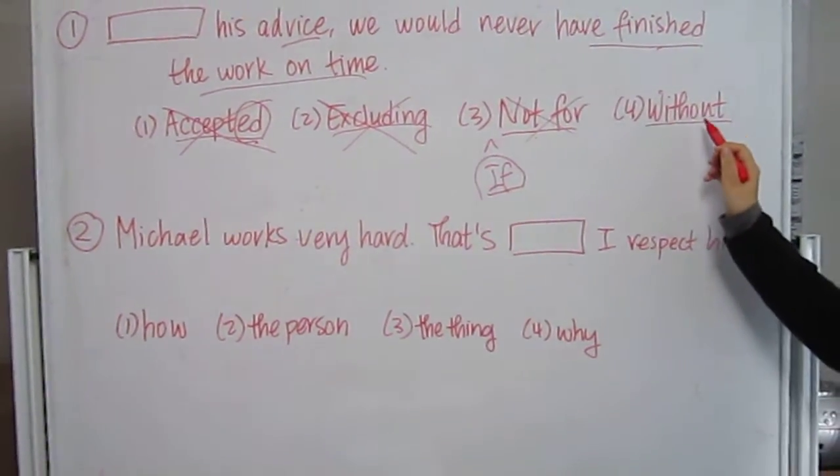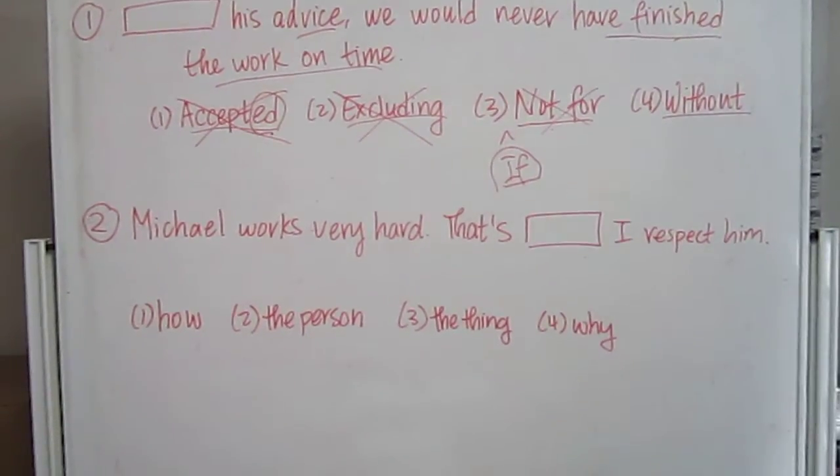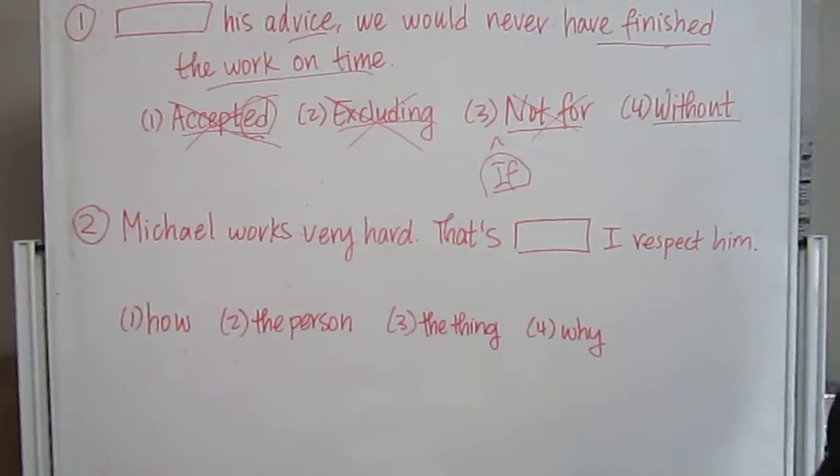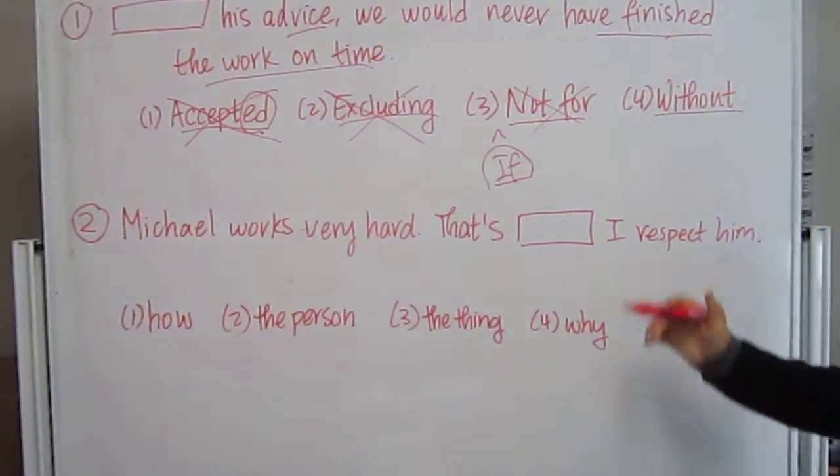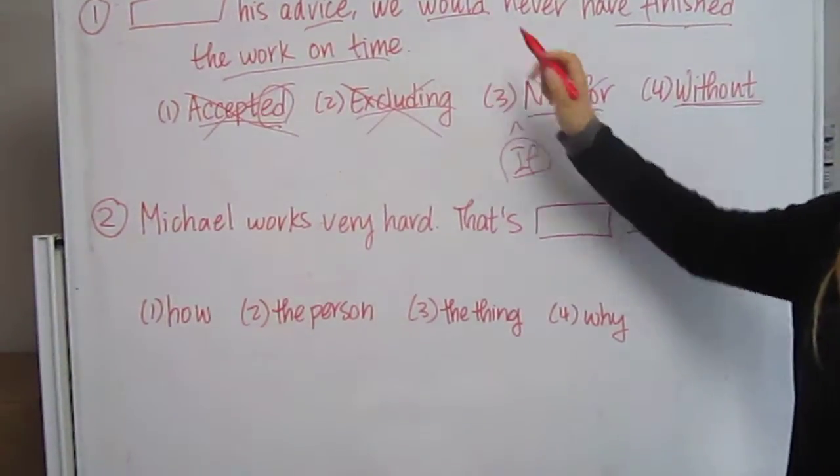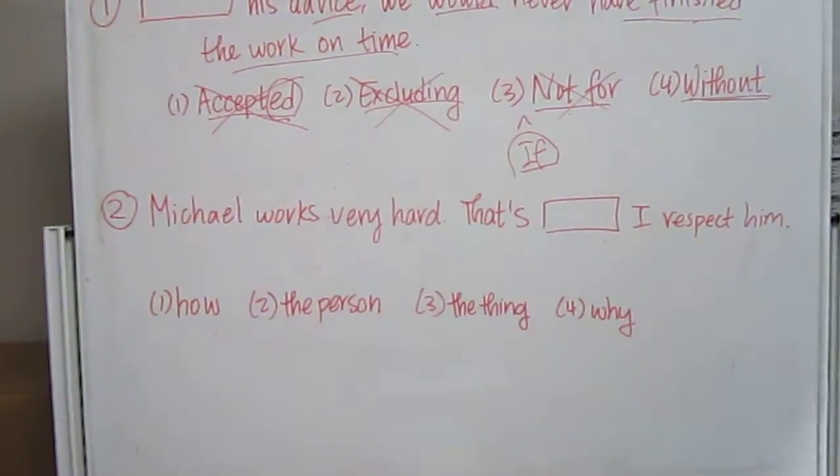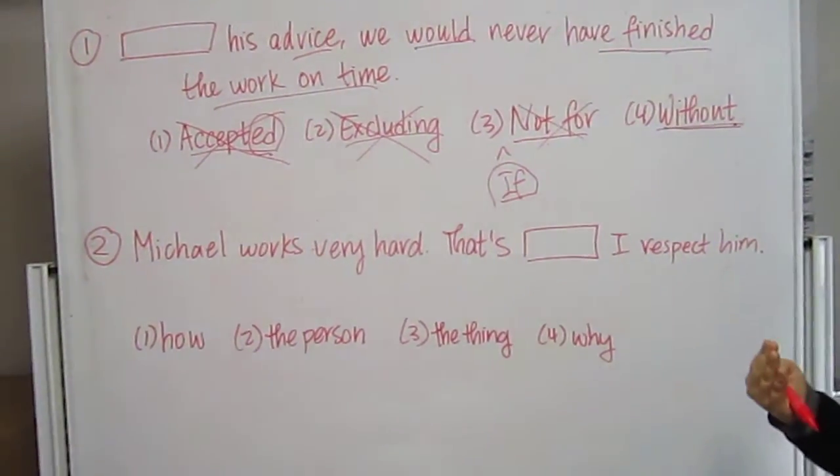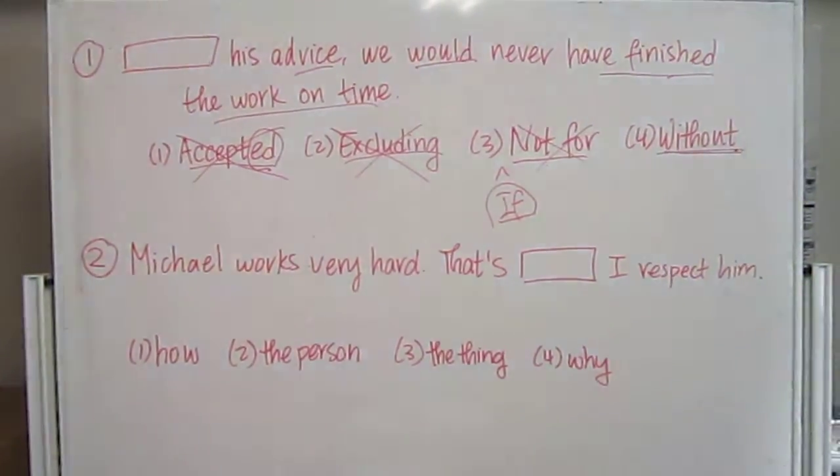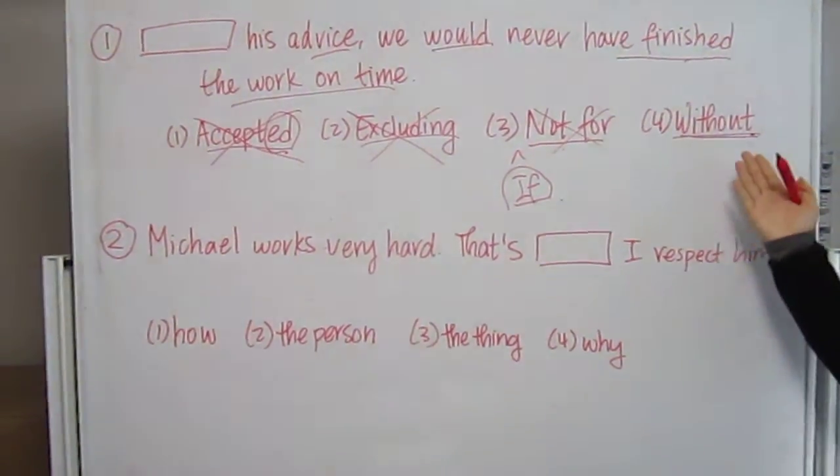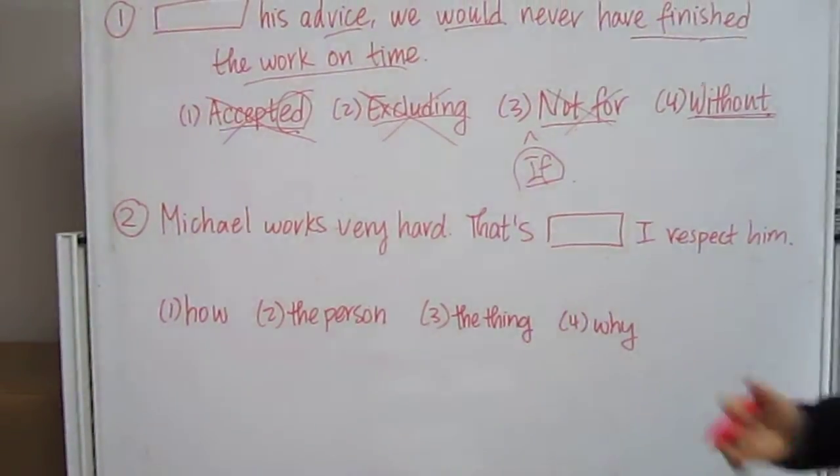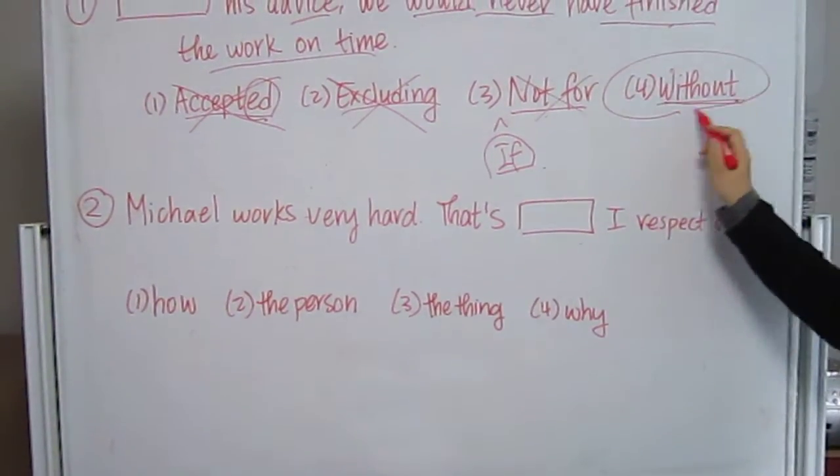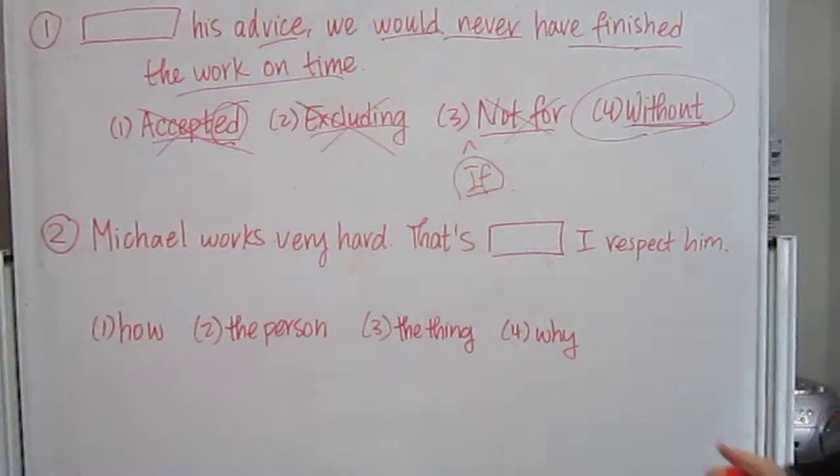The last word, without. Without is the same thing as if not for. So now it says, without his advice, we would have never finished the work on time. Without combined with would gives us a hypothetical situation. Which means that even though this word seems like it means a bad thing, it's really not. Because they're saying, if not for his advice, if we did not have his advice, we would have never finished our work on time. But we did. So you would have to use the word without.